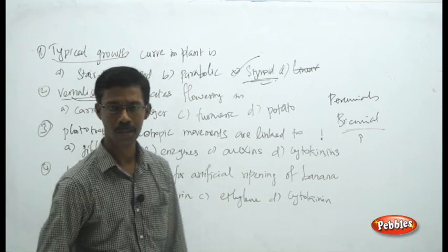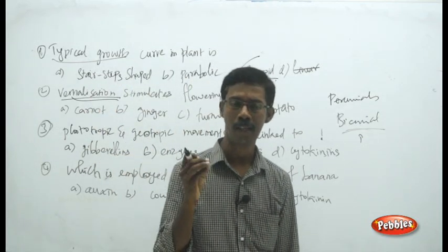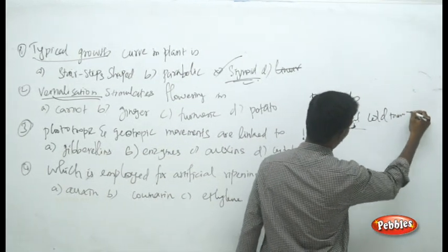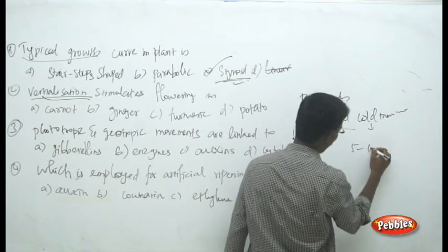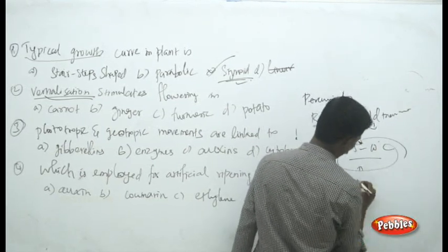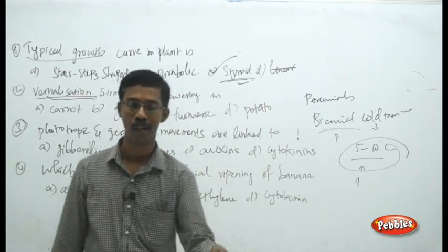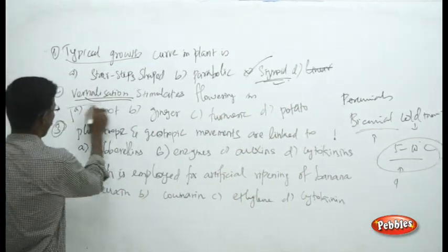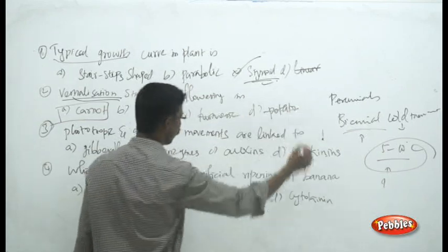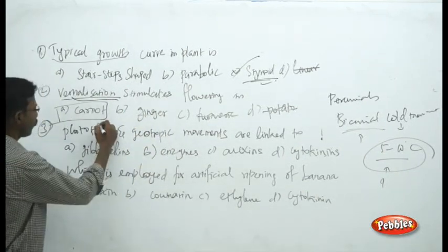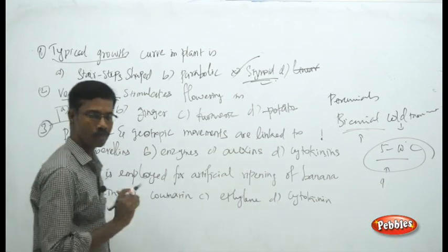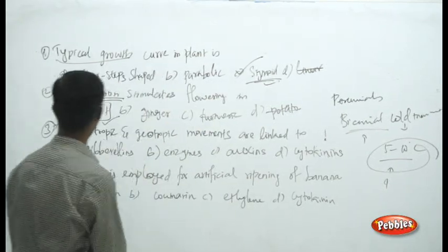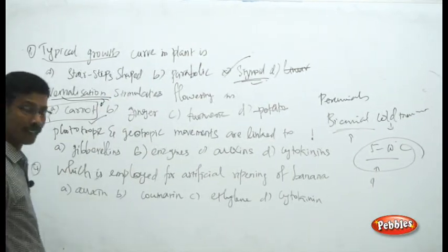Vernalization is the process of applying artificial cold treatment — 5 to 10 degrees centigrade for some duration — to induce flowering artificially in the plant. The biennial plant in the answer choices is carrot. Ginger, turmeric, potato and other plants are not biennial. You can induce flowering in carrot by treating it with cold treatment. The answer: vernalization stimulates flowering in carrot.